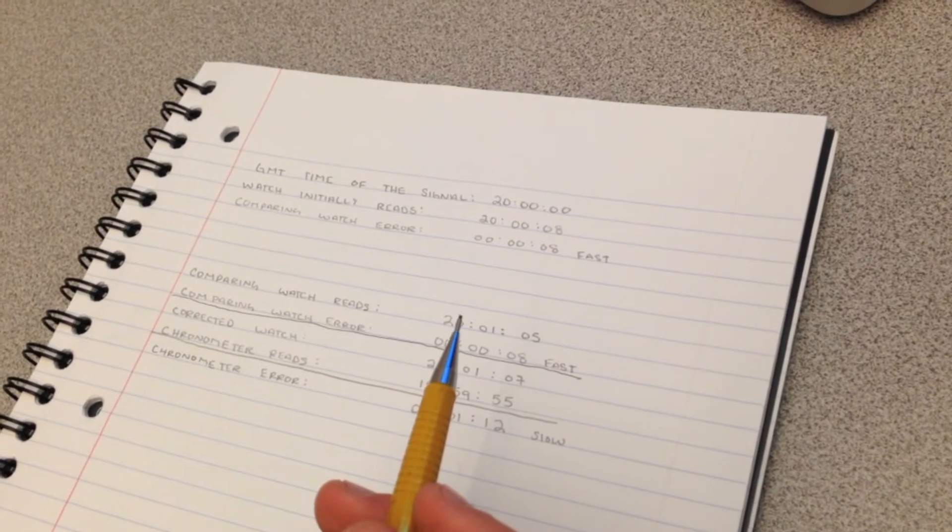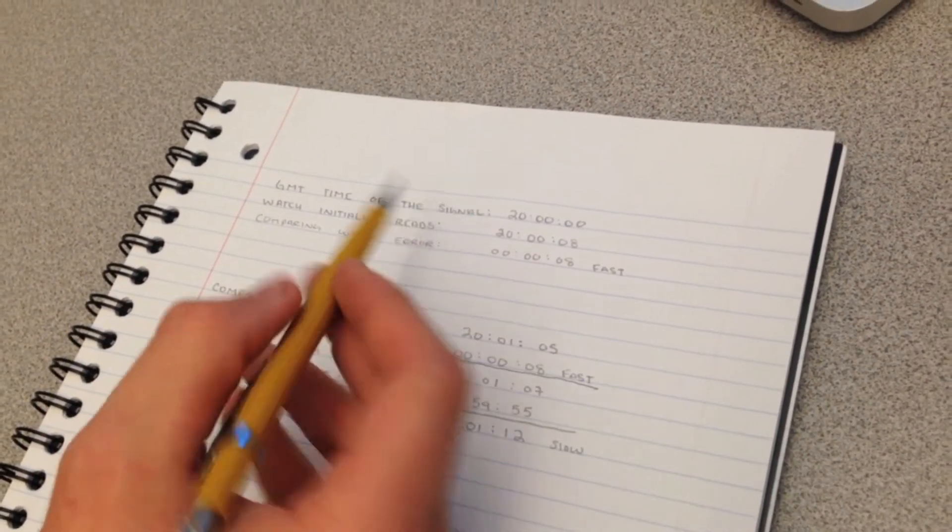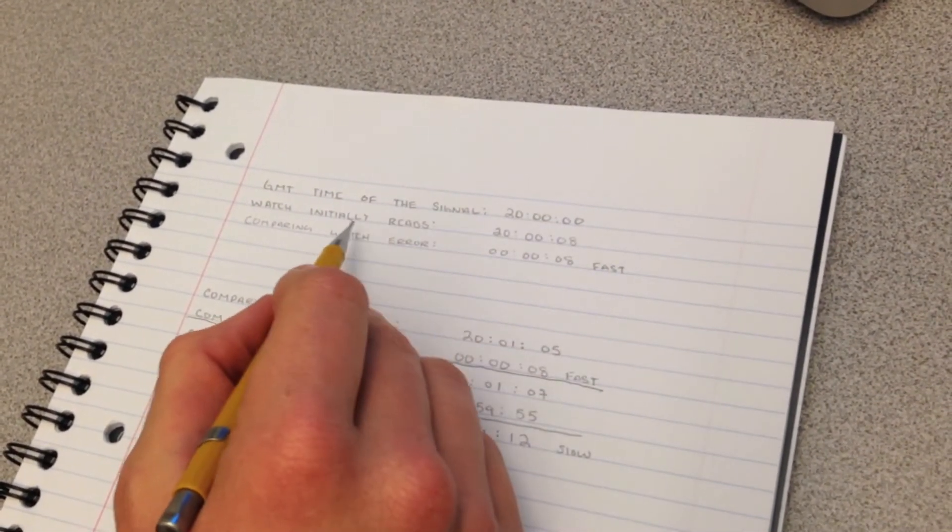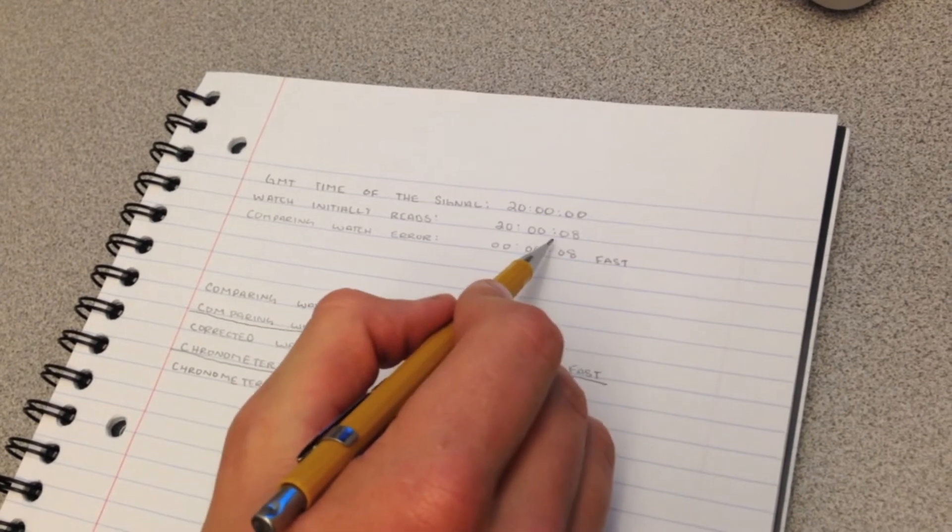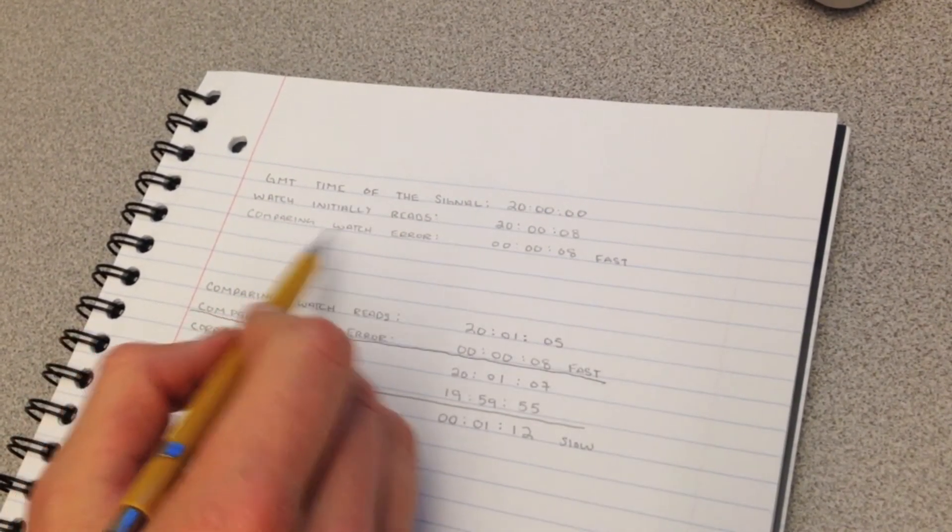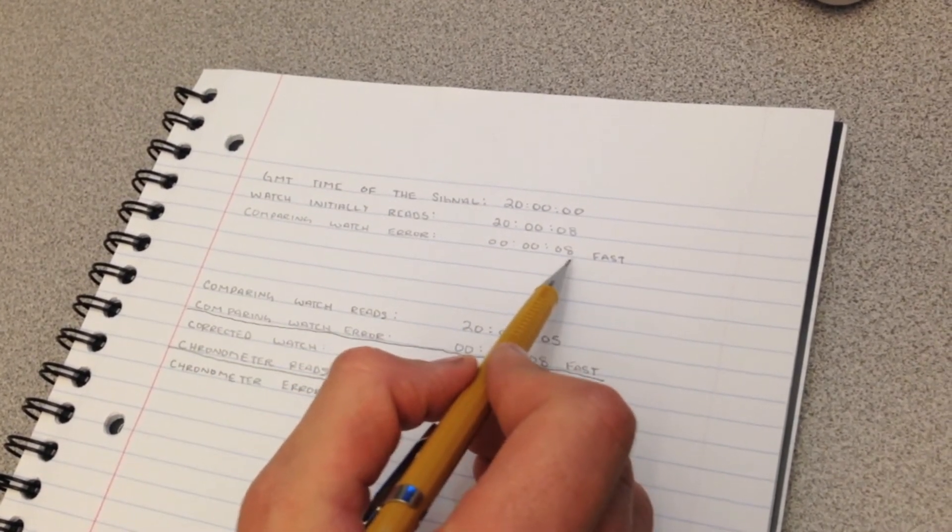The first thing you want to do is compare what the watch initially reads to the GMT time of the signal. The GMT time of the signal is 20-hundred. The watch initially reads 20-hundred, 00, 08 seconds. This means the comparing watch error is 00, 00, 08 seconds fast.